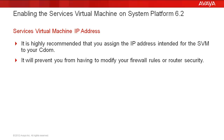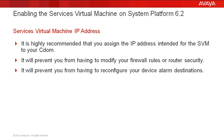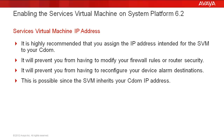First, it will prevent you from having to modify any firewall rules or router security in your network for this new IP address. Second, it will also prevent you from having to reconfigure the alarm destination of all of your System Platform and solution template virtual machines to point to this new IP address. This is possible because everything in your environment will remain configured with the original CDOM IP address that your Cell Gateway once used, but which you have now assigned to your SVM.